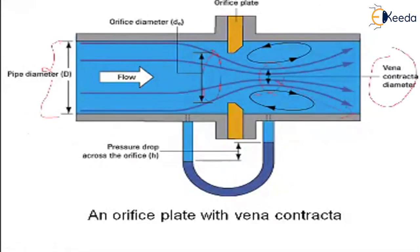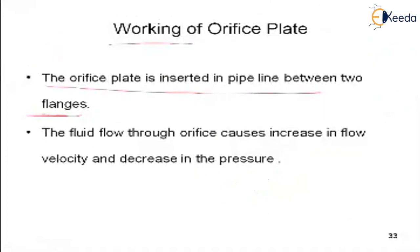The orifice plate is inserted in a pipeline between two flanges — flange one and flange two — and the orifice plate is located between them. The fluid flowing through the orifice causes an increase in flow velocity and a decrease in pressure. At one position beyond the orifice plate, the velocity is maximum and the pressure is minimum.